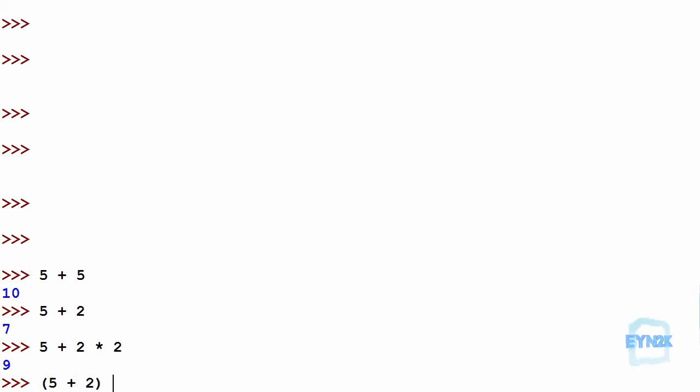Now we can look at some examples in the console. 5 plus 5, then pushing enter to return the result of 10. 5 plus 2, push enter to return the result of 7. 5 plus 2 multiplied by 2 returns the result of 9. Remember that multiplication is done before the plus. If we want to do 5 plus 2 first to get 7, then multiply the result by 2, we simply put it inside the braces, then multiply by 2, to get the result of 14.